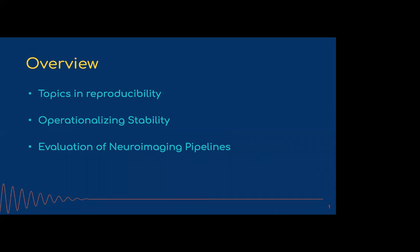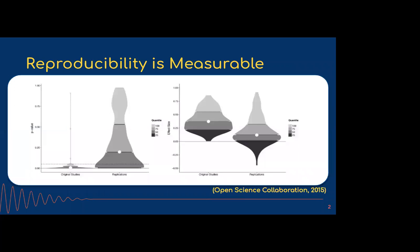I'll start with an overview of the reproducibility crisis and the part I care about, talking about how we can operationalize the term 'stability.' Many of you have probably seen this paper published in 2015 by the Open Science Collaboration, started by Brian Nosek. They took 100 studies — the original reported p-values where this line is 0.05 — and in their attempts to replicate, it turns out most of the time you can't replicate things. They found a success rate of about 33%, and the remaining two-thirds they weren't able to replicate. Effect sizes were also often inflated in the original studies.